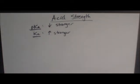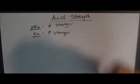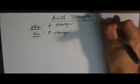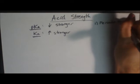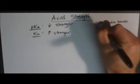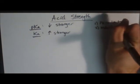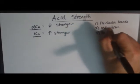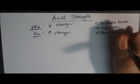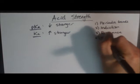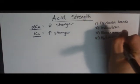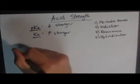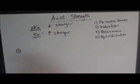There are four different ways to determine the acid strength — four factors that play into it. You have periodic trends, induction, resonance, and lastly hybridization. I will talk about each of these briefly. First, let's look at periodic trends.